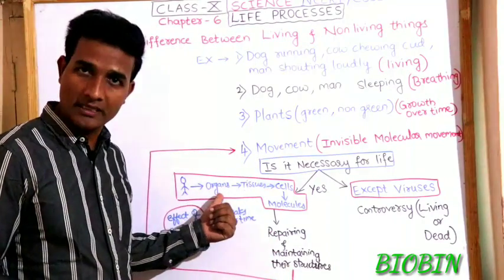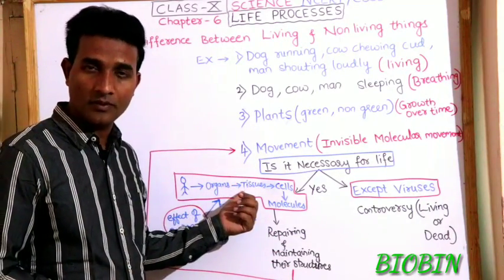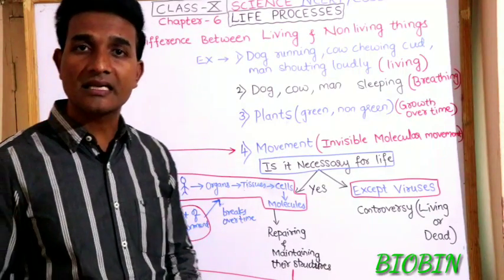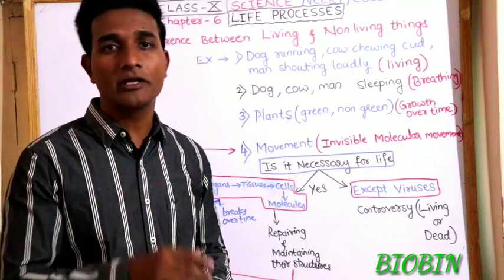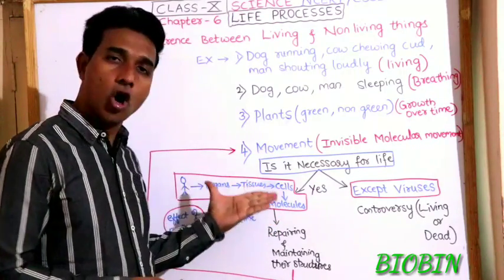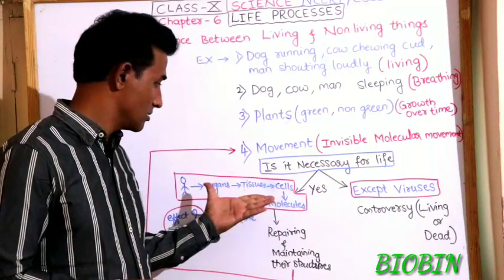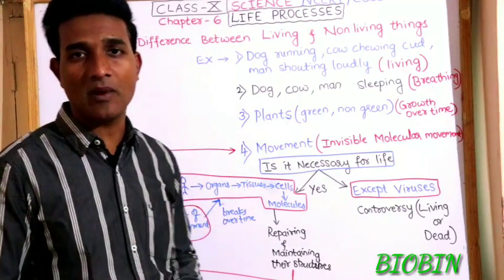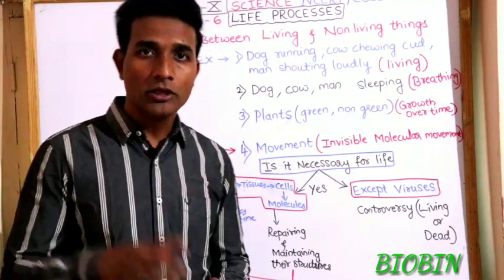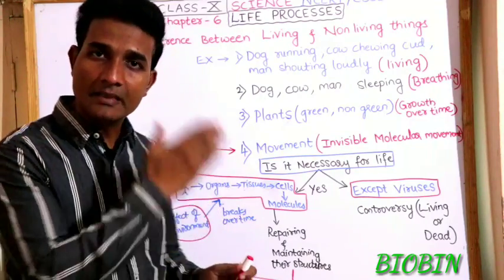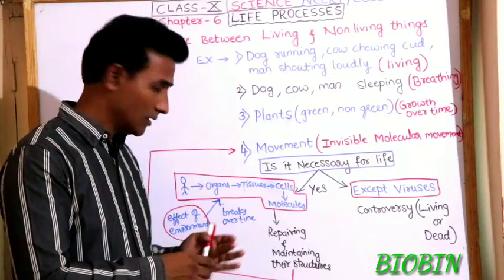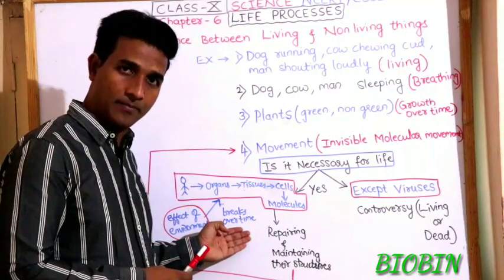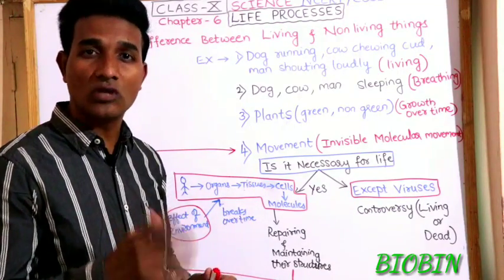When we come to the organization of living organisms, the body is made up of organs, which in turn are made up of tissues, which in turn are made up of cells. Cells contain different types of molecules. This organization is always continuously affected by the external environment.